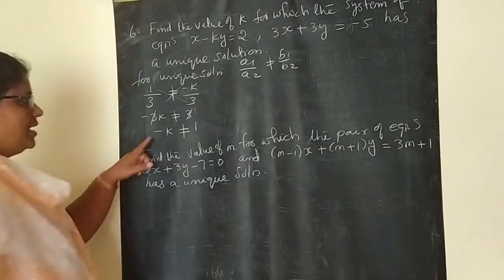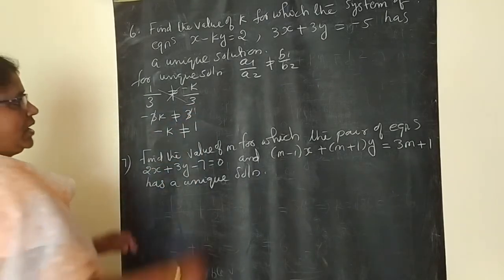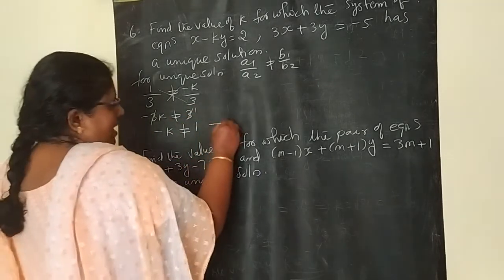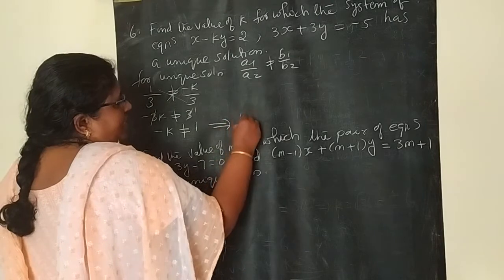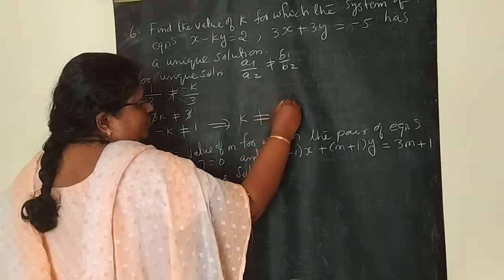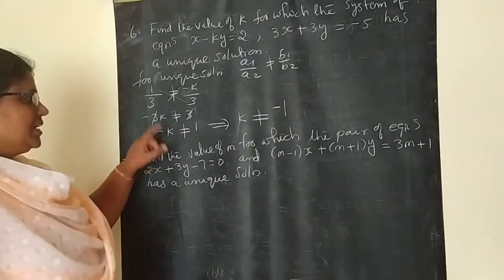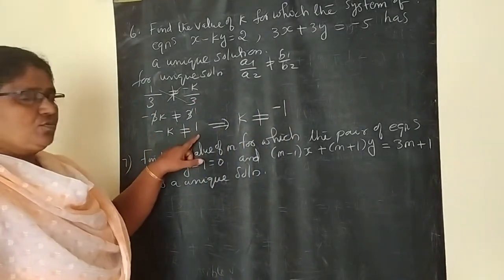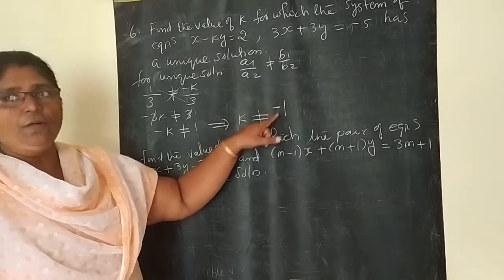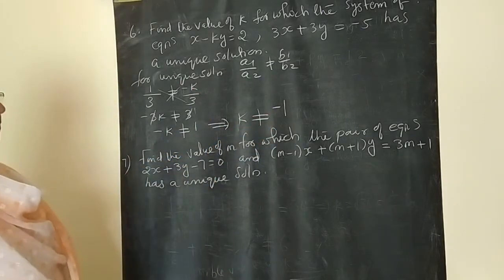We get minus K not equal to 1, which implies K not equal to minus 1. So the answer for the first problem is K not equal to minus 1.